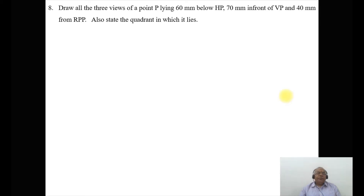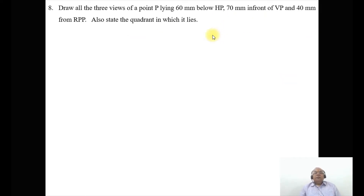In this video, we will discuss how to analyze the projections of points in the fourth quadrant. The problem reads: draw all three views of a point P lying 60 mm below HP and 70 mm in front of VP and 40 mm from RPP. Also state the quadrant in which it lies.